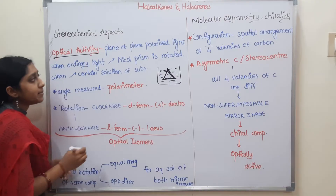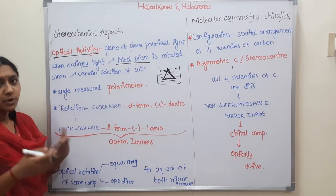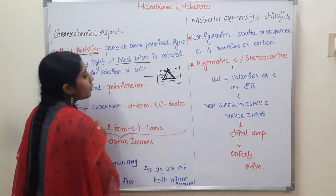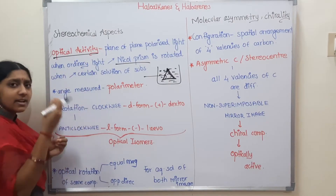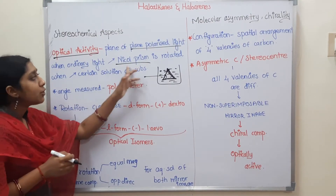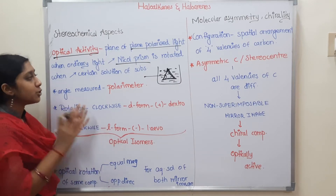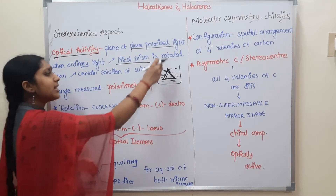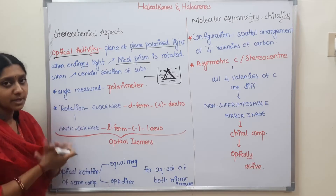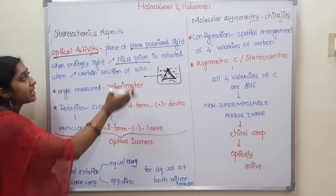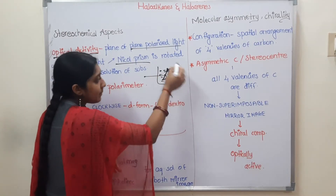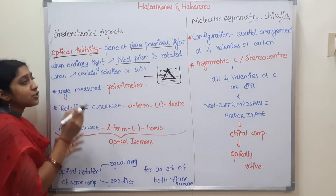A Nicol Prism is a type of polaroid. Polarization is a type of wave optics, from physics. A Nicol Prism converts ordinary light — which travels in random directions — into plane polarized light, which travels in a single direction. So: ordinary light passes through a Nicol Prism and becomes plane polarized light, and that plane polarized light then passes through the solution.